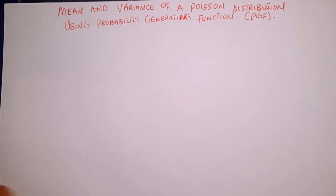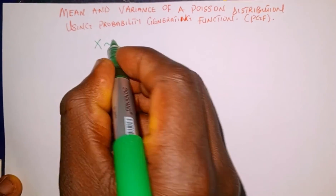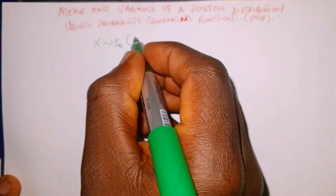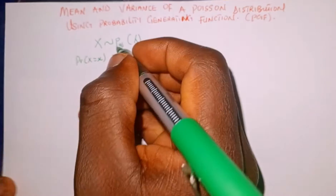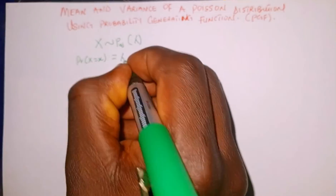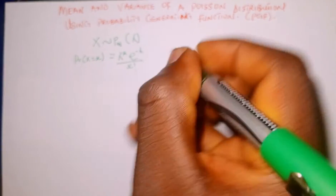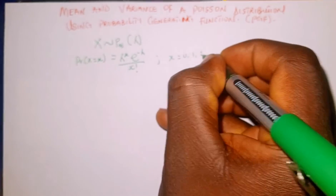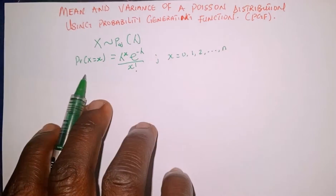The next thing we're going to do is write the distribution of a Poisson. X is distributed as Poisson with parameter lambda, and the probability of X equal to x is lambda to the power x, times e raised to the power of minus lambda, all over x factorial, where x is 0, 1, 2, up to n. This is the probability function of a Poisson distribution.